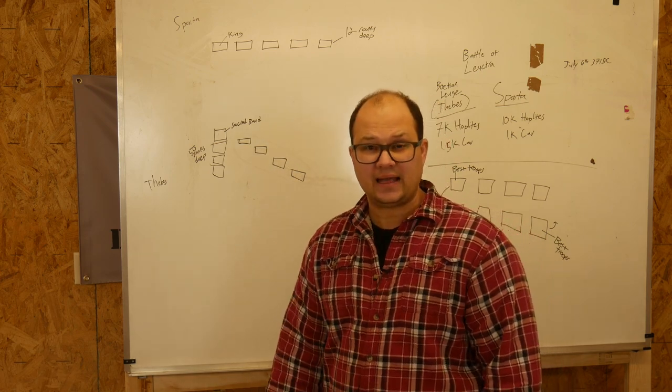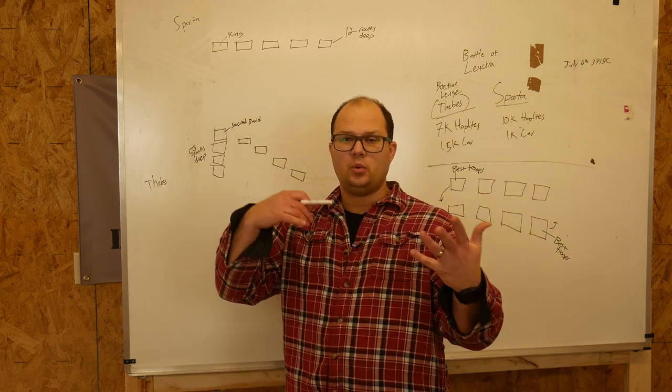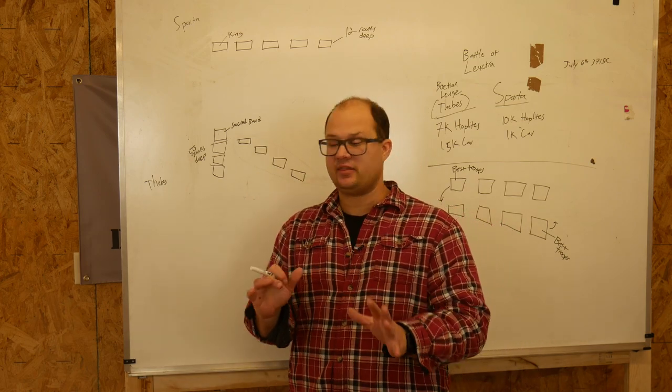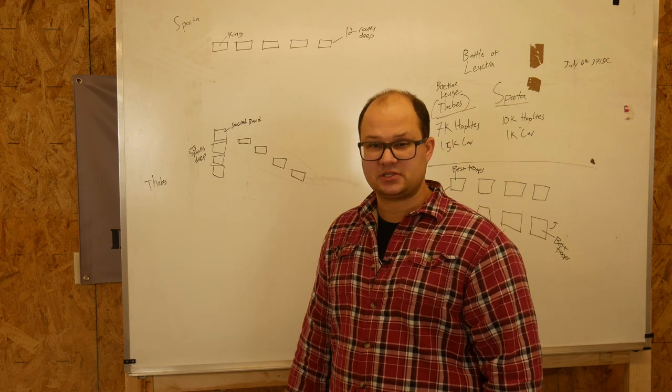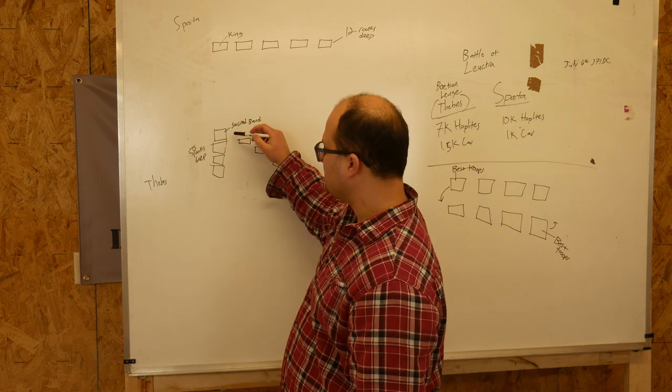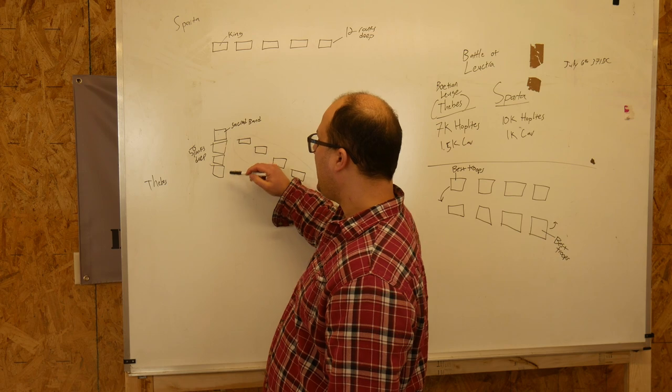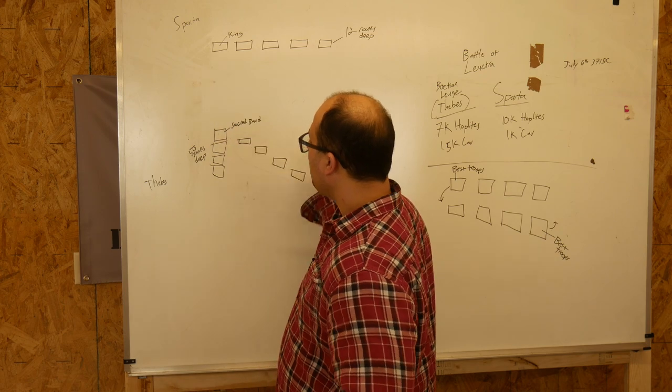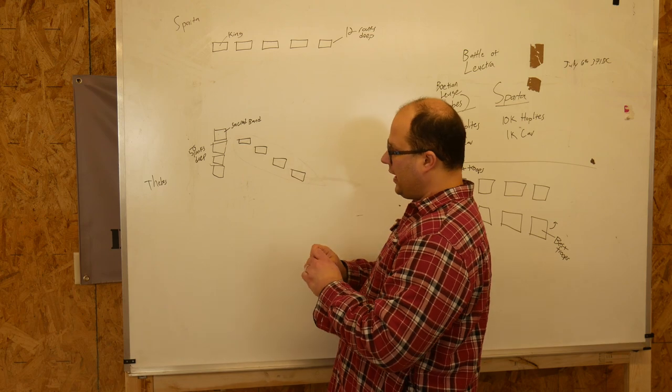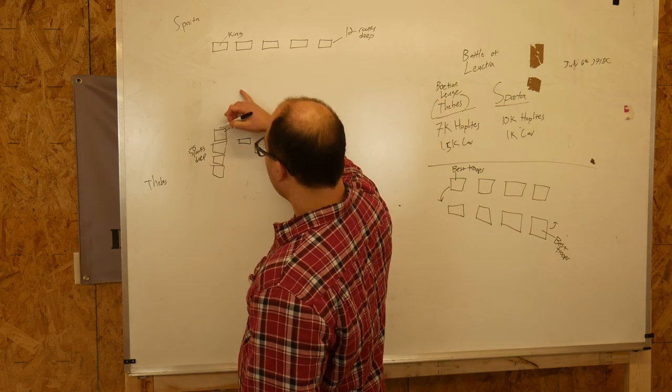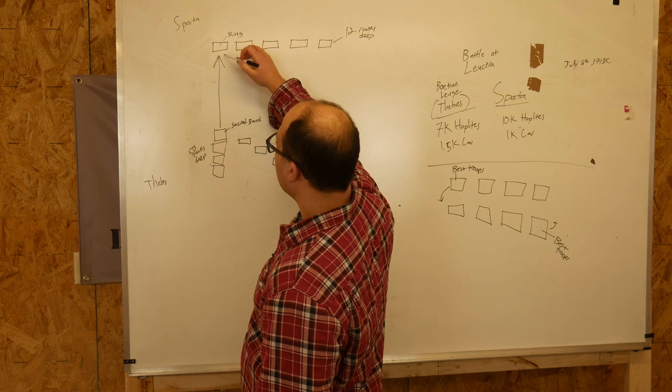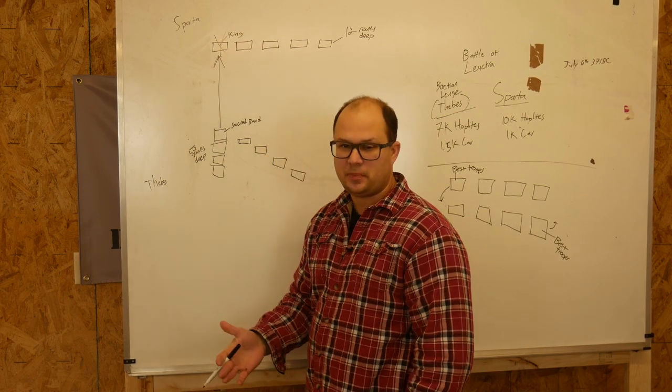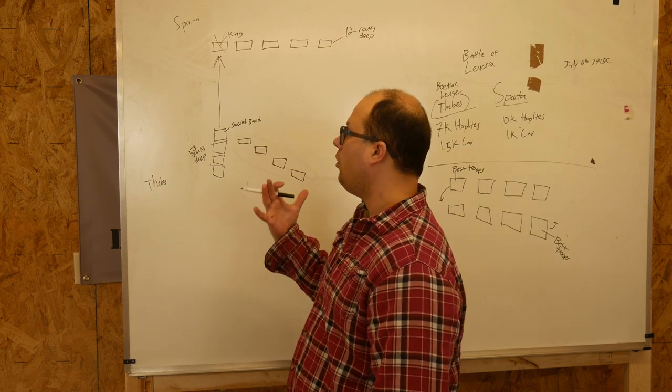Think back to our last battle that we just did with Scipio Africanus and how he was able to fix the enemy in place by never actually fighting them. That's a similar concept to what's going on here. So Thebes lines up about 50 ranks deep, and they put their best guys against their best guys. Well, you can see how this is going to go. So as they approach, eventually they make contact first. They're able to completely destroy the best troops of the Spartans and break their right wing.